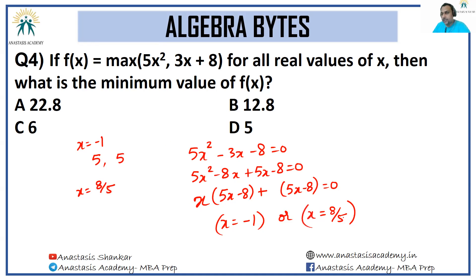8/5 is 1.6. 1.6 × 3 is 4.8. 4.8 + 8 is 12.8. So I'll get 12.8 and 12.8.